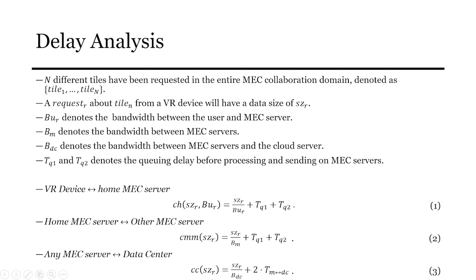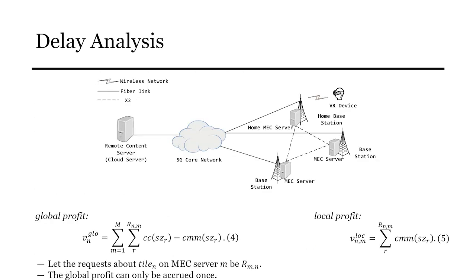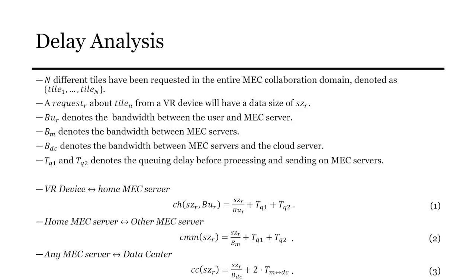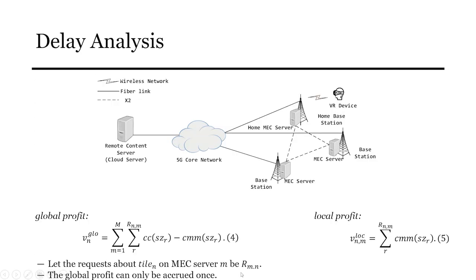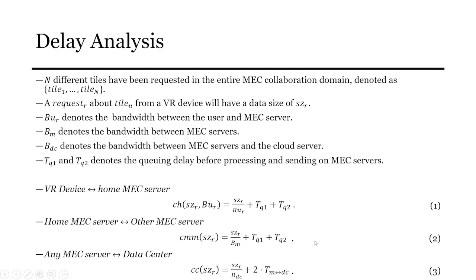The communication delay between VR device and the home MEC server can be described as formulation 1. The communication delay between the home MEC server and the other MEC server can be described as formulation 3. Where TMDC denotes the communication delay between the home MEC server and the remote server. As shown above, the system of equations can be used to estimate the time delay of both prediction and the remediation requests.